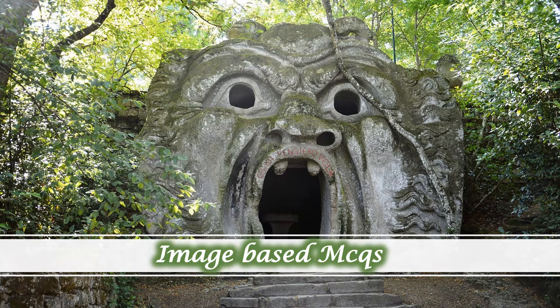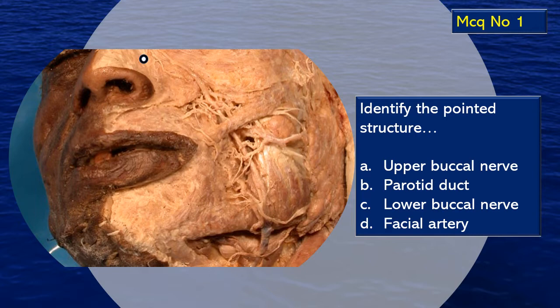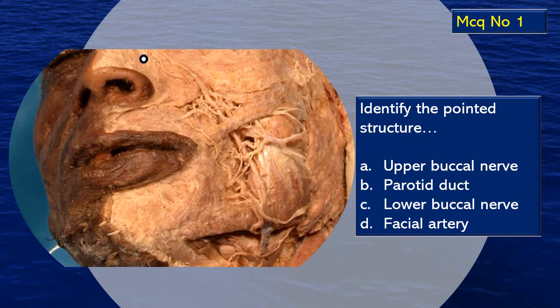Let's start with image-based MCQs. MCQ number one: identify the pointed structure. There is a flashing yellow arrow pointing to a particular structure. By the way, this is a dissection of the face. All the muscles, vessels, nerves and glands have been neatly dissected and demonstrated. There are a set of choices to identify the pointed structure.